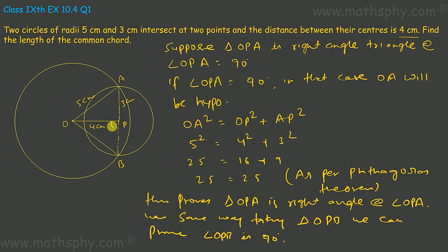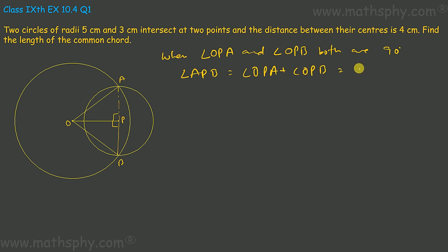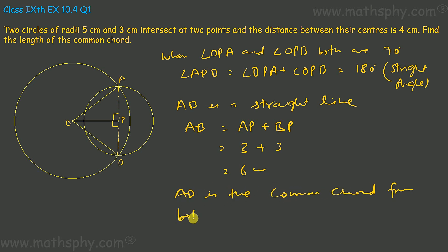This angle here is 90 degrees. When angle OPA and angle OPB both are 90 degrees, angle APB will be angle OPA plus angle OPB, equals 180 degrees — this angle is a straight angle. When angle APB is a straight angle, AB is a straight line. AB equals AP plus BP. AB will be: AP is 3, BP is 3, so AB comes to 6 centimeters. And AB is the common chord for both the circles.